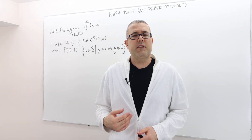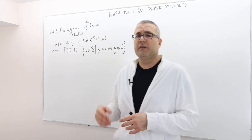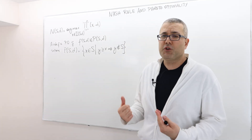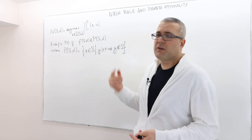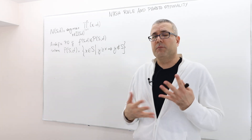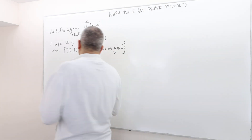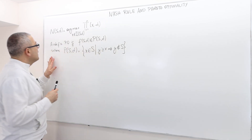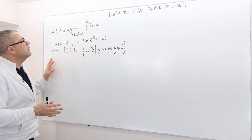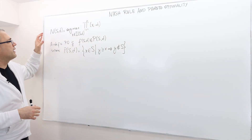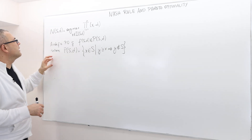Hello everyone. In this episode I'm going to show that the Nash bargaining rule actually satisfies proto-optimality. How do we show it formally? Let's first remember the definition of the Nash rule and proto-optimality.